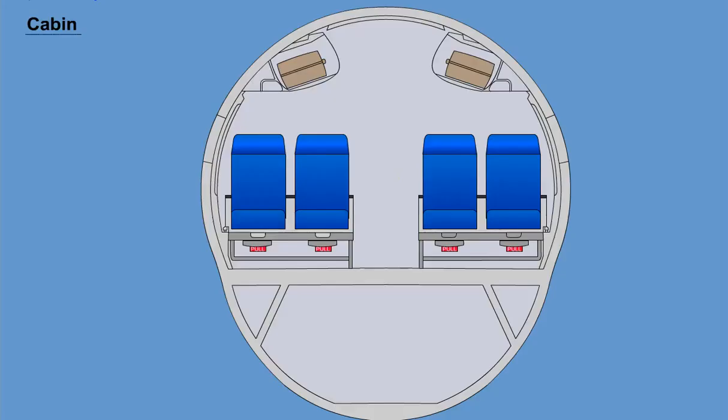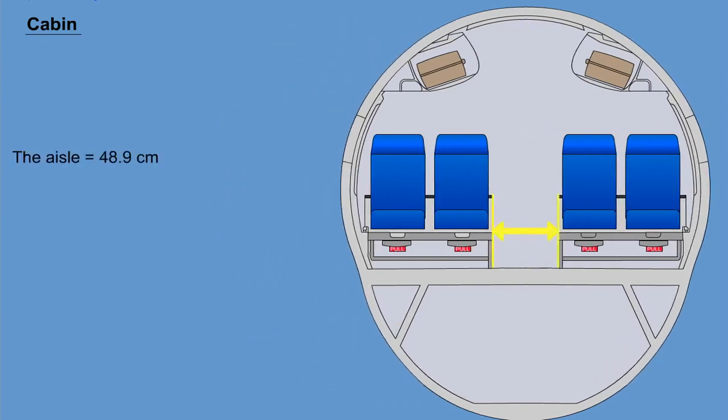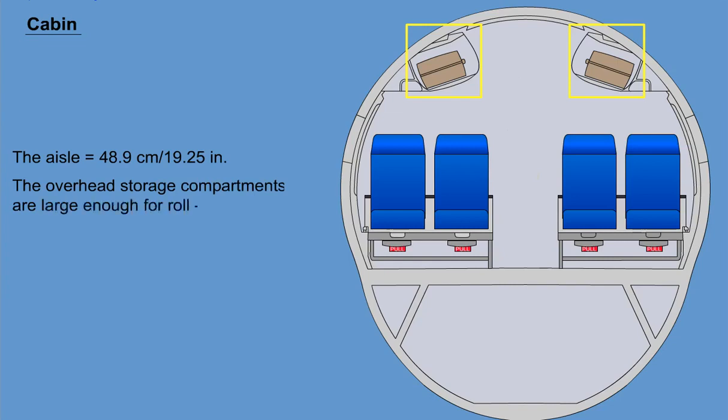The passenger cabin is 274 cm, 9 feet wide at shoulder level, and 200 cm, 6 feet 7 inches high. The aisle is 48.9 cm, 19.25 inches wide. The overhead storage compartments are large enough for roll-on bags.